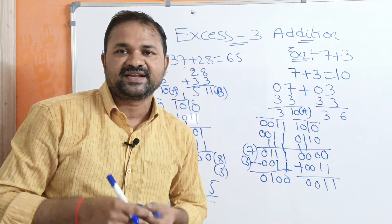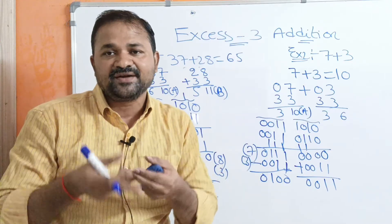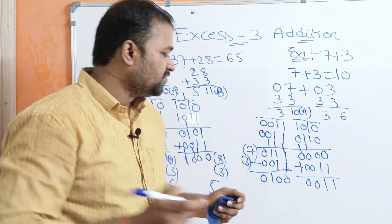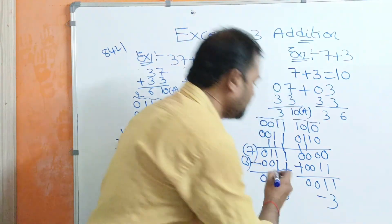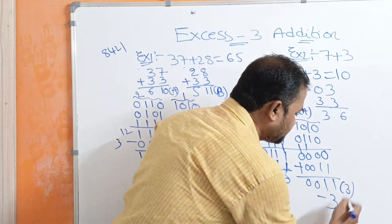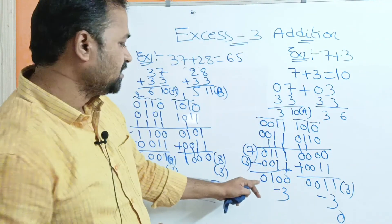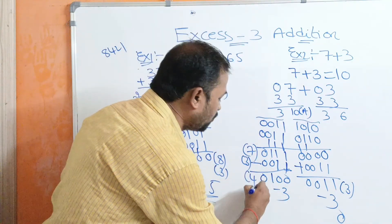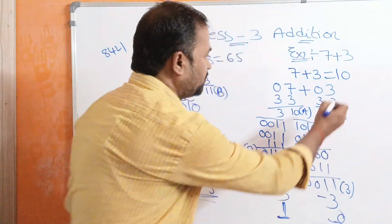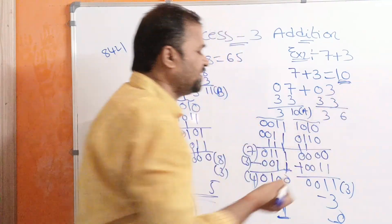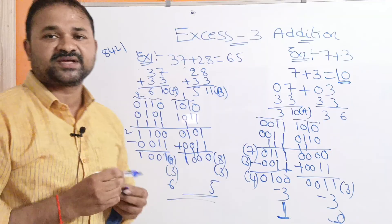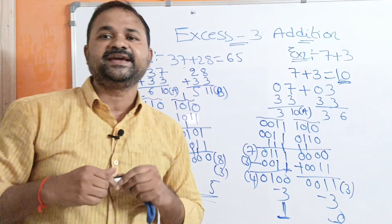So the result after adding the two XS3 numbers is 0001 0100. Let us verify: to get the decimal number, subtract 3 from each group. 0011 is 3, so 3 minus 3 is 0. 0100 is 4, so 4 minus 3 is 1. The decimal result is 10, which confirms 7 plus 3 equals 10. This concludes our discussion of XS3 addition.